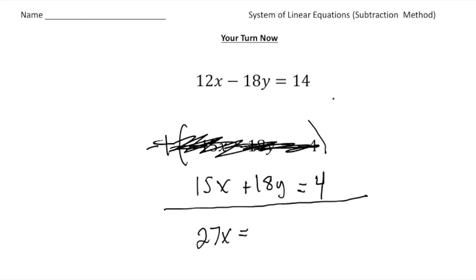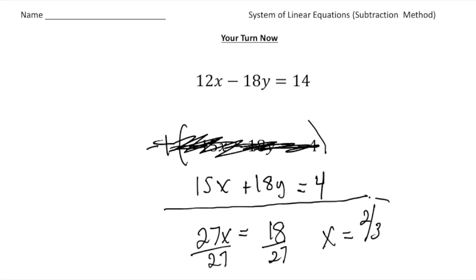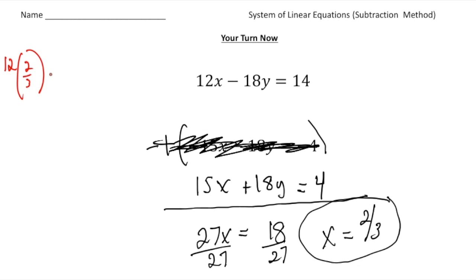27x equals 14 plus 4, which is 18. Divide both sides by 27: x equals two-thirds. To get the y value, replace x with two-thirds in the first equation: 12 times two-thirds is 24-thirds, which is 8. So 8 minus 18y equals 14.